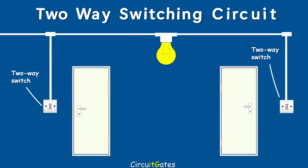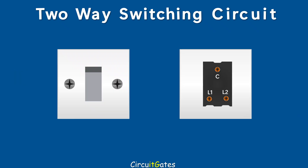The two-way switching circuit has two two-way switches. A two-way switch has three terminals: one terminal is labeled L1, another is labeled L2, and the last is labeled common. The common is the terminal where the live wire from the supply is connected, or the live wire going to the lamp from the switch is connected.